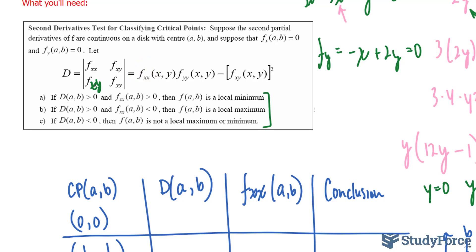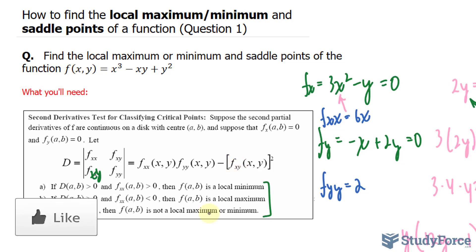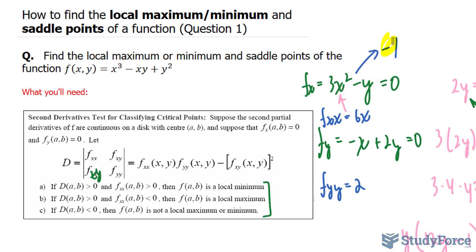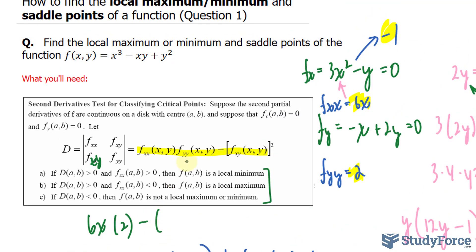Now let's find the determinant. We need the second partial derivatives. The first partial derivative with respect to x was 3x² - y, so f_xx = 6x. The second partial derivative f_yy = 2. We also need the mixed partial f_xy: starting from f_x = 3x² - y, the x² term becomes 0 and the -y term gives -1, so f_xy = -1. Substituting into the determinant formula: D = f_xx · f_yy - (f_xy)² = (6x)(2) - (-1)² = 12x - 1.